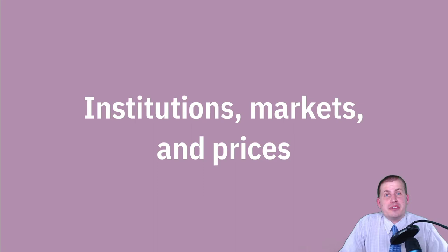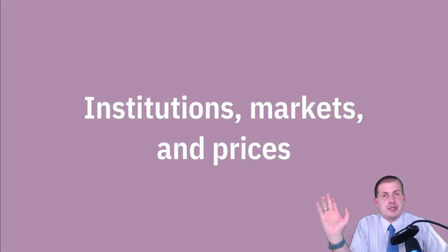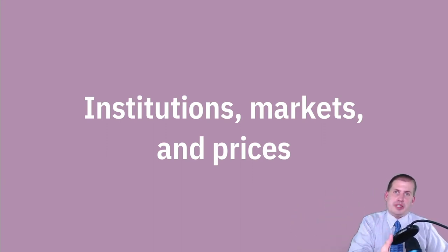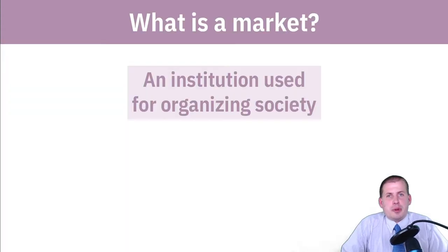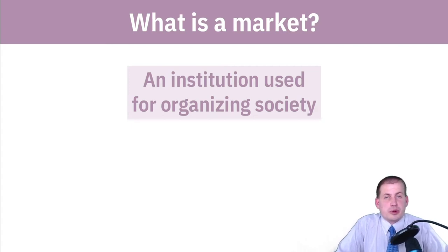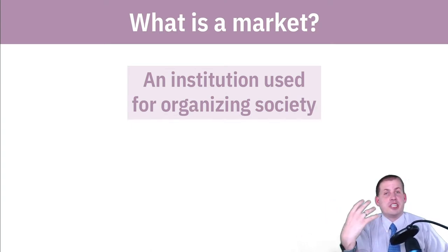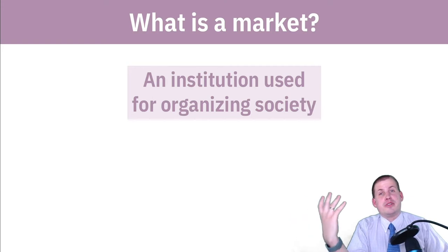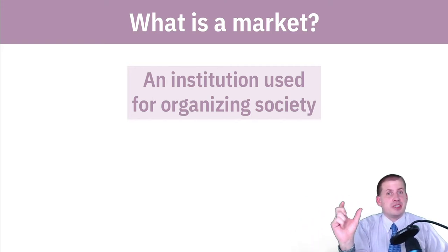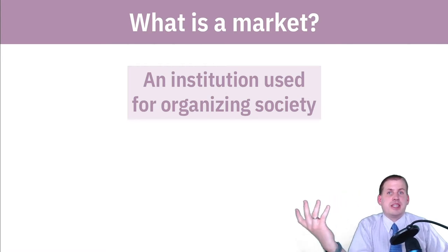Before we start talking about market failures, it's important to go back to what we talked about in a couple of sessions at the beginning of the class about what a market actually is. If we want to know how it's failing, we want to know what it is that's failing. From session two we talked about markets as an institution used for organizing society. In the previous session we talked about institutions and how they shape our behavior, how they emerge from interactions with other people, how they can be seen as game theory. Markets are also one of the institutions in society.